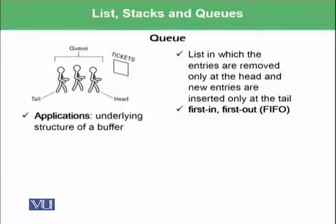The next data abstraction based on list is the queue, which is almost the inverse of a stack. In a queue, entries are removed only at the head and new entries are inserted at the tail. This is called first in first out, whereas a stack was called last in first out.